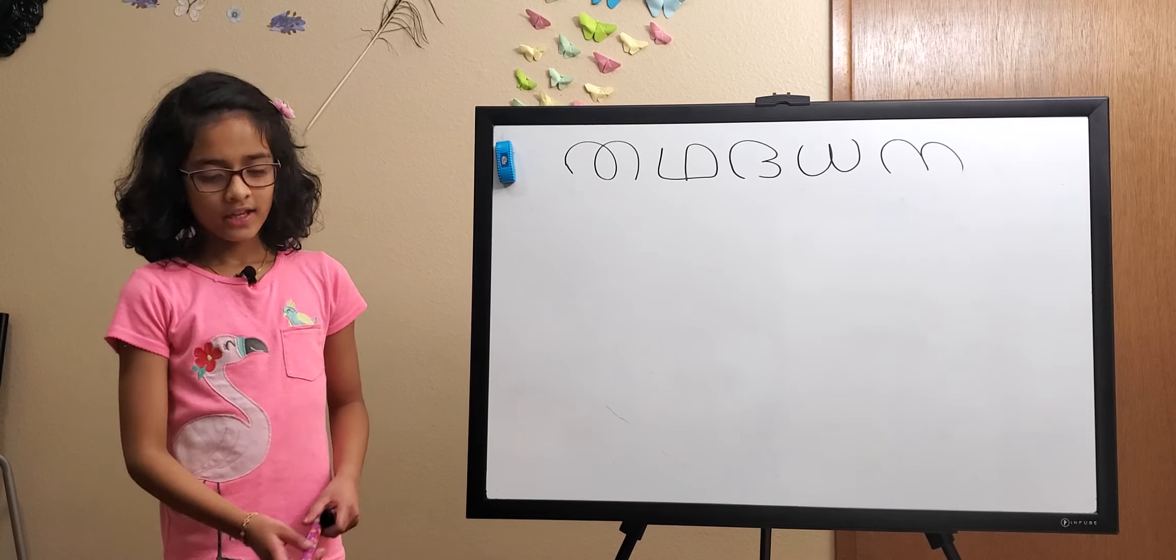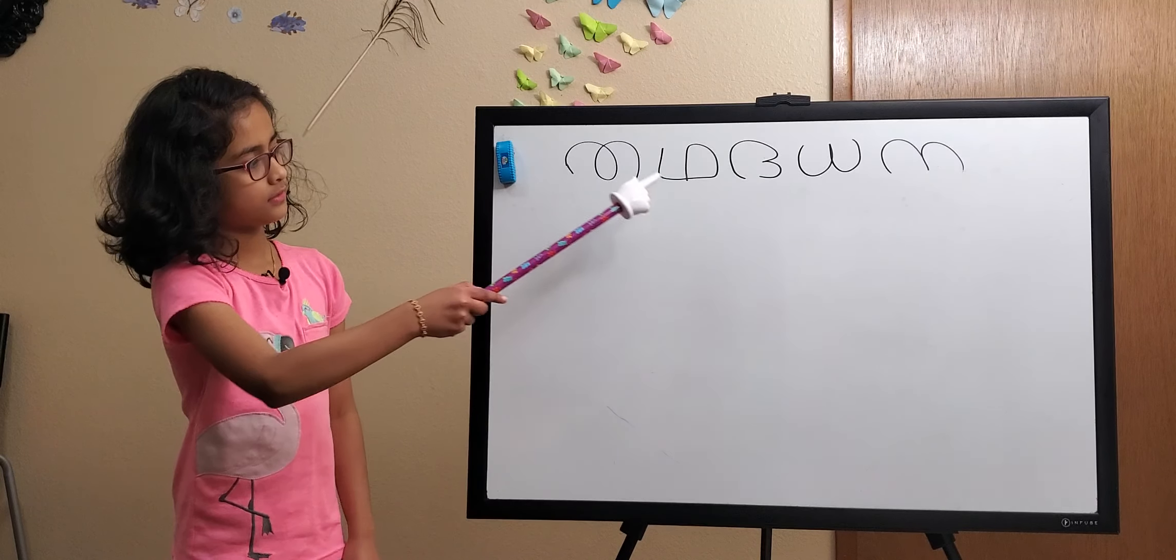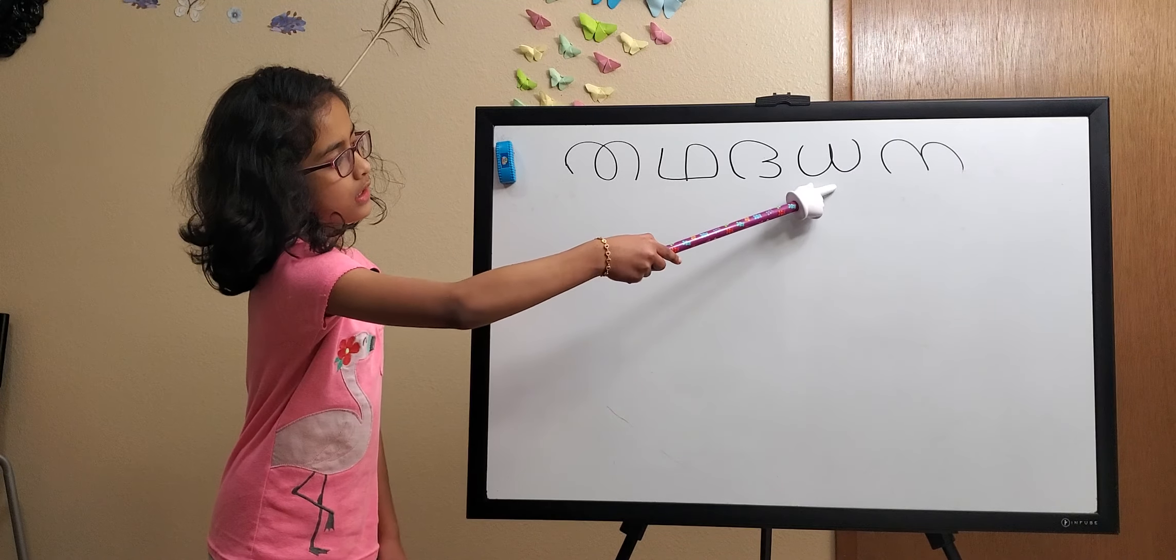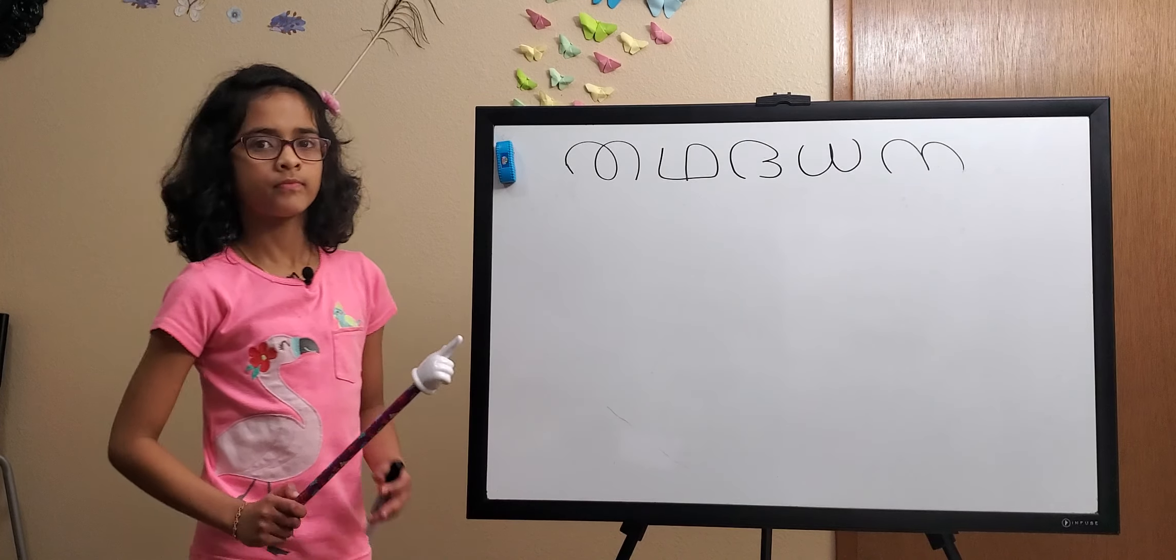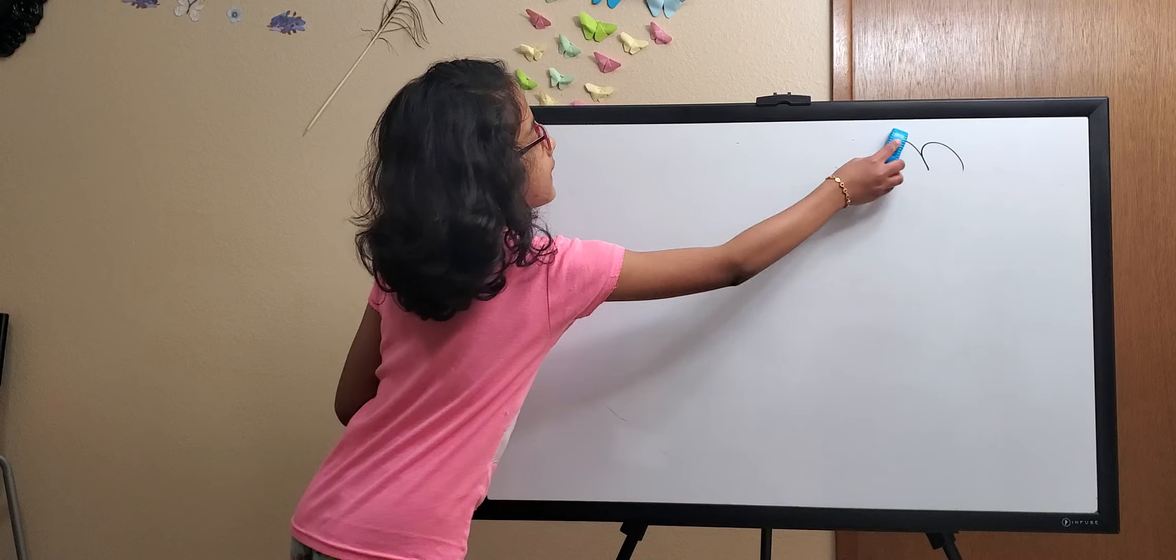Hi friends, welcome back. These are the letters we learned last time: THA, ITTA, DA, ITDA, NA. Today we're going to learn the next five letters.